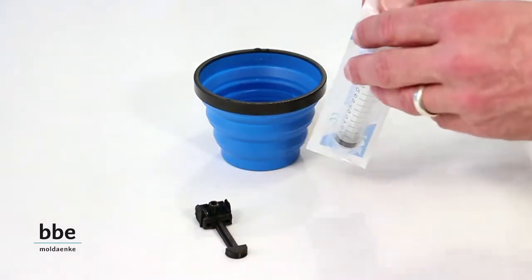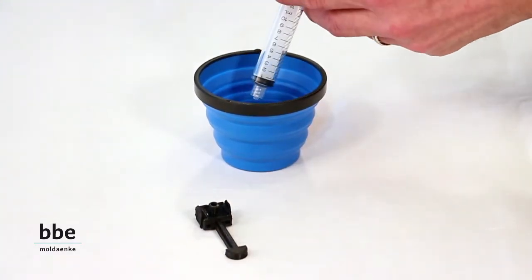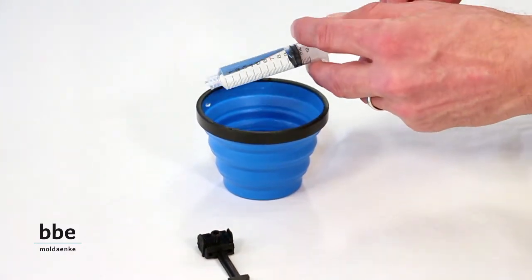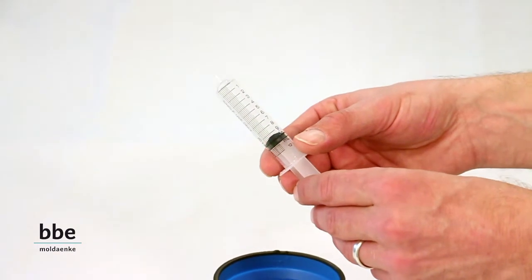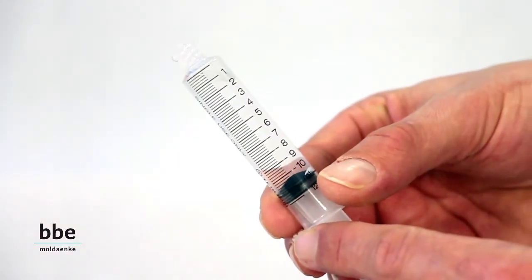Using the syringe, take a 10 milliliter sample from the cup. Additionally leave one milliliter of air to avoid dead volume during the filtering.